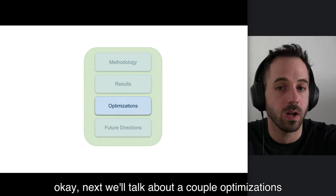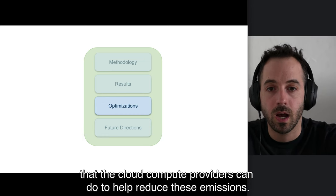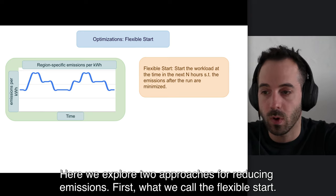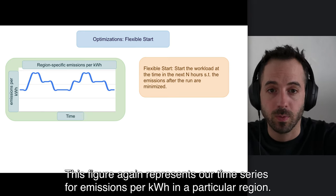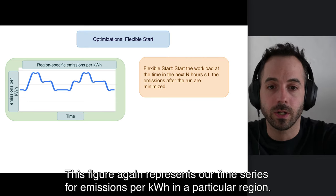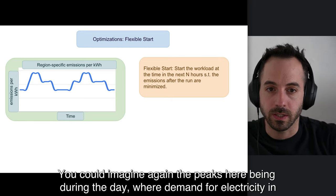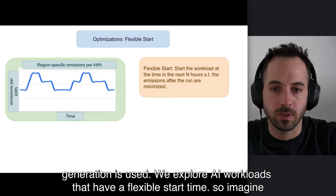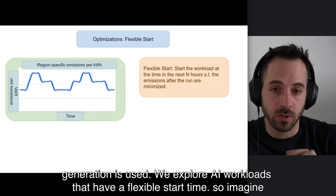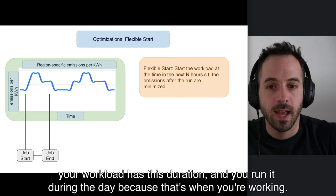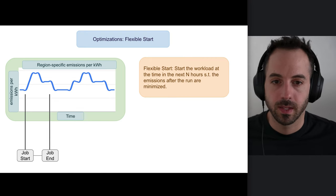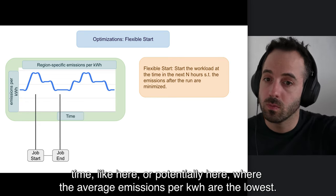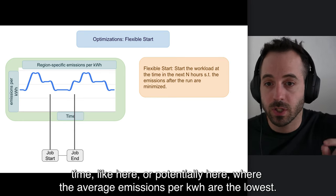Next we'll talk about a couple optimizations that cloud compute providers can do to help reduce these emissions. Here we'll explore two approaches. First, what we call the flexible start. This figure again represents our time series for emissions per kilowatt hour in a particular region. You could imagine the peaks here are during the day where demand for electricity in the region is greater, and overnight you've got those valleys where only the most efficient power generation is used. We explore workloads here that have a flexible start time. So imagine your workload has some duration, and you want to run it during the day because that's when you're working. If this is a regularly scheduled workload, you instead might be able to run it at a different time where the average emissions per kilowatt hour are lowest.